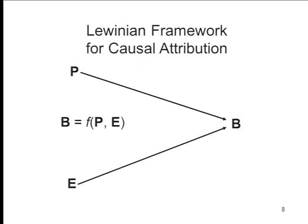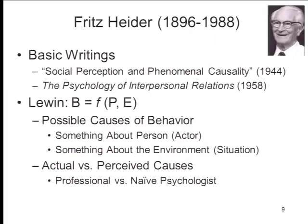This framework was adopted by Fritz Heider, another refugee from Hitler's Europe, who devoted himself to social perception and social cognition. He took Lewin's basic formula — B as a function of P and E — and said that when people try to figure out why something happened, they apply something very much like this formula intuitively. They figure there are basically two possible causes: something about the person, the actor, or something about the environment, the situation. Heider was also careful to distinguish between the actual and perceived causes of behavior.